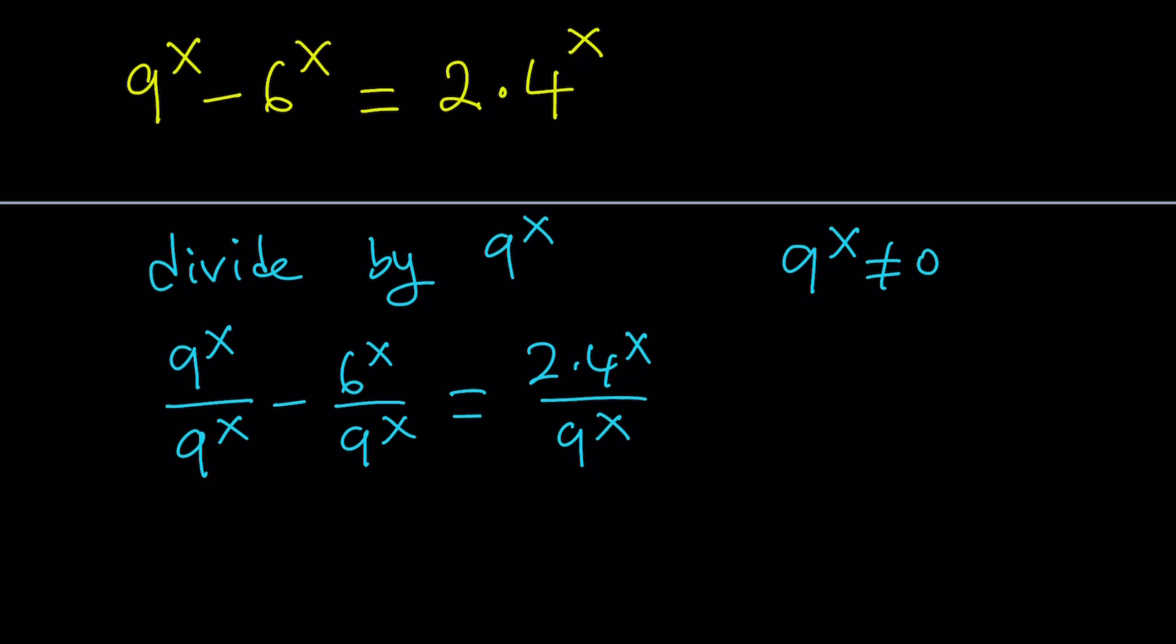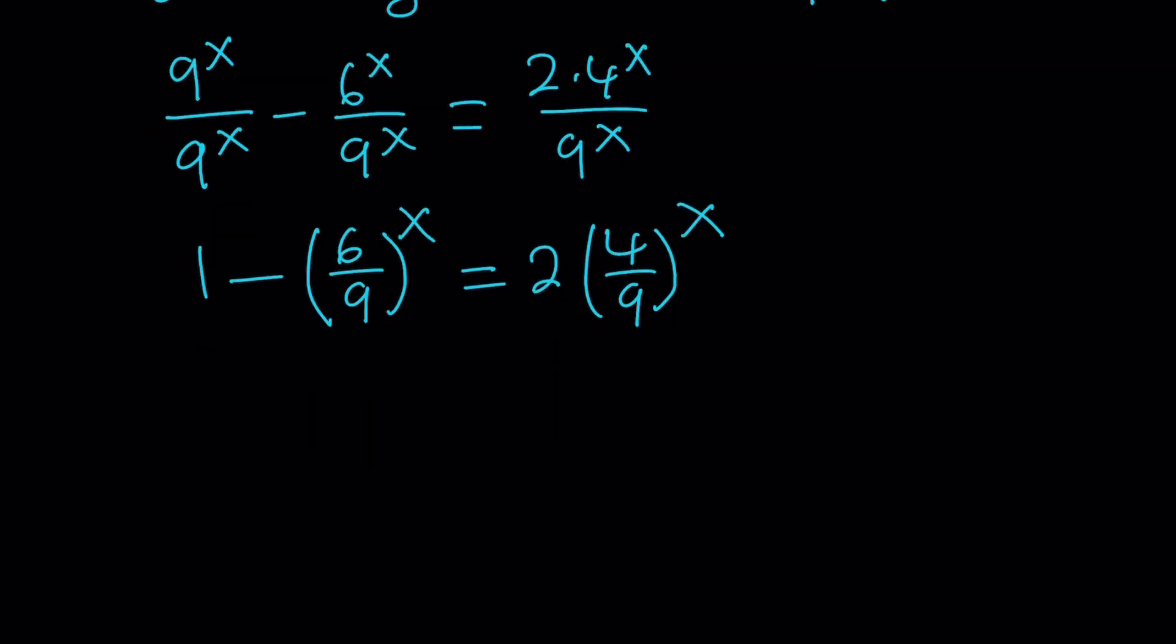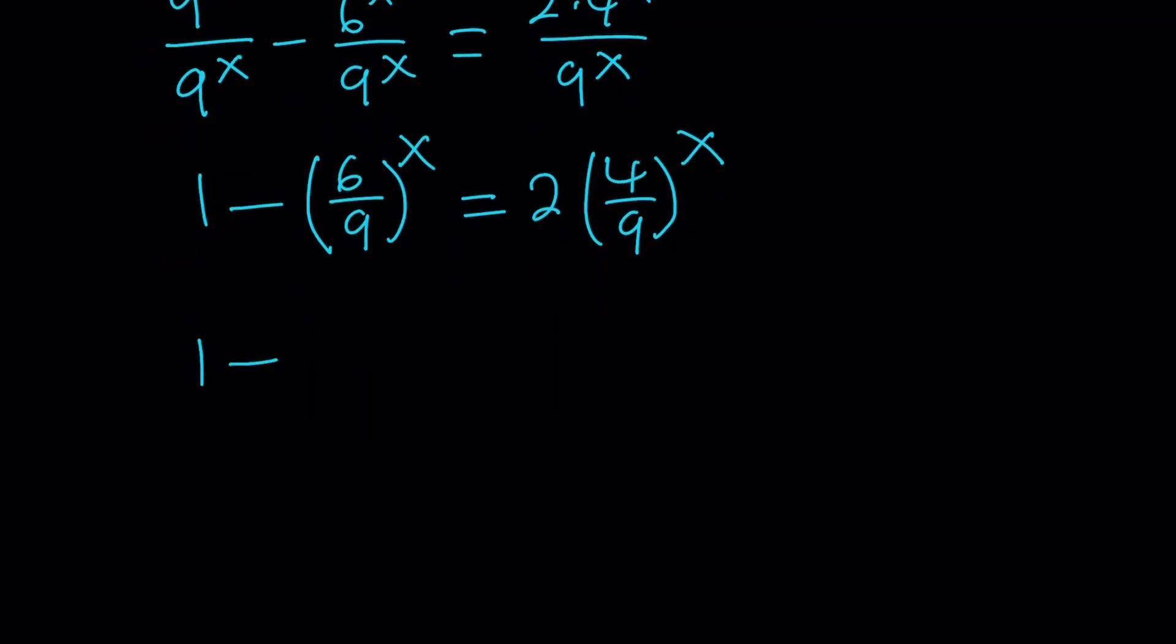9^x cannot be 0, so it's okay to divide both sides by that. If x is negative infinity, this can be 0, but negative infinity is not a number. So from here we get 1 - 6^x/9^x = 2·4^x/9^x. This can be written as 1 - (2/3)^x = 2(4/9)^x. Now this would be nicer if we wrote it as (2/3)^x. And here's where the critical part starts. Notice that 4/9 is (2/3)^2. Awesome, awesome.